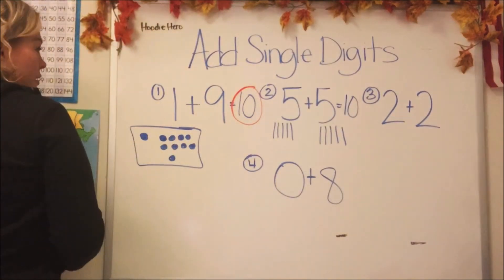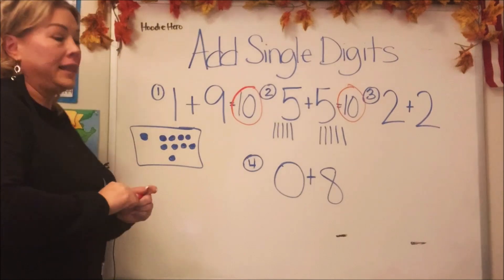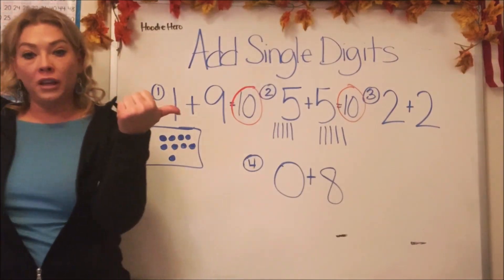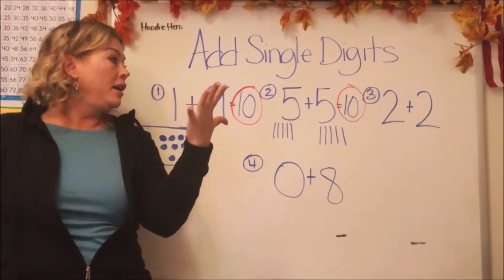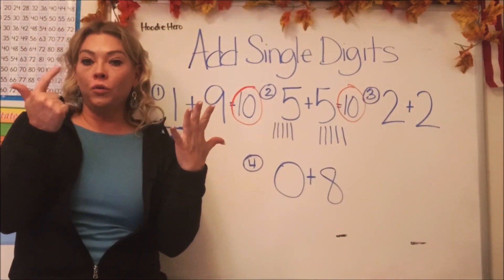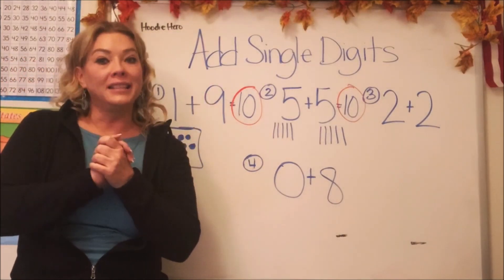Okay, let's circle that in red so we can see the answer. See how we did that? Again, we could use our fingers. One, two, three, four, five and add five more. One, two, three, four, five. How many do we have? Ten.